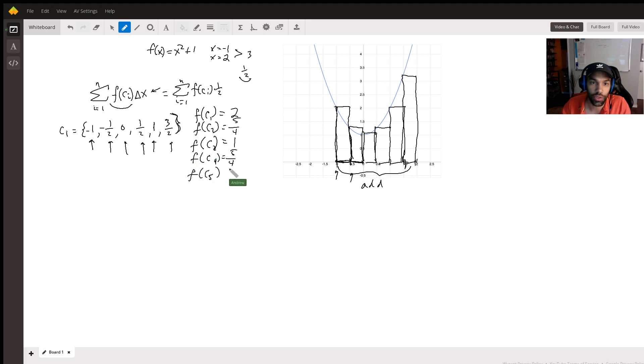Here, which is one half, which is also going to give us five-fourths. Fifth one, we plug in one, that's going to give us two. And then last c6, which is that one there, we plug that in, we are going to get, let's see, I think it's 13 over four, if I'm not mistaken. 13 over four, is that right? I believe it is. Yes.